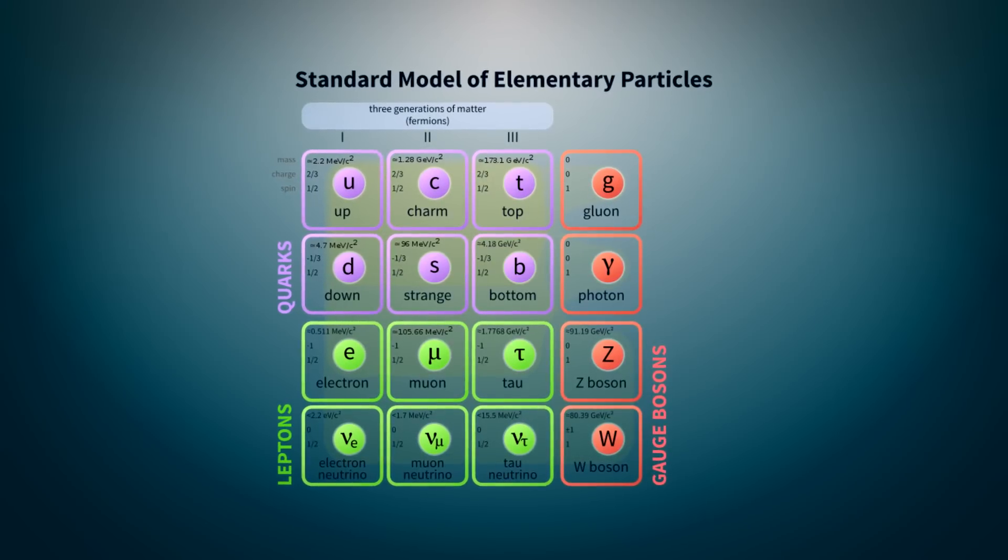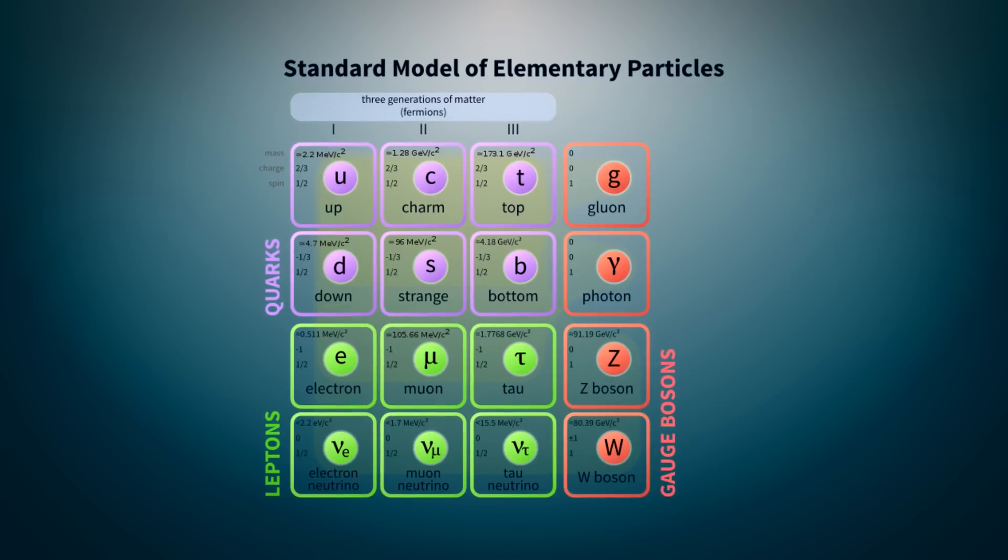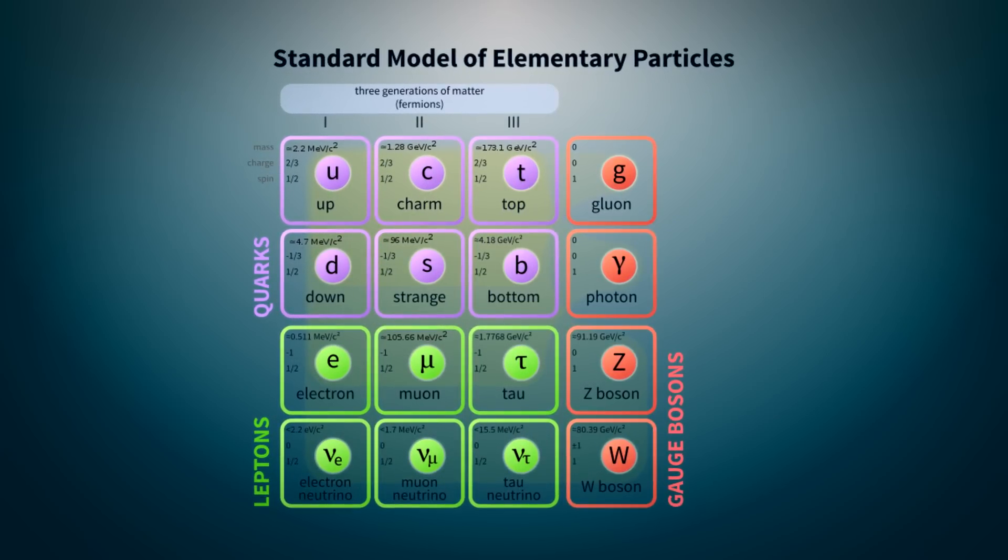In the second half of the 20th century, physicists developed something called a standard model of particle physics. Nearly all phenomenon and the underlying particles that make up the ultimate building blocks of the universe can be explained by this model, except gravity.